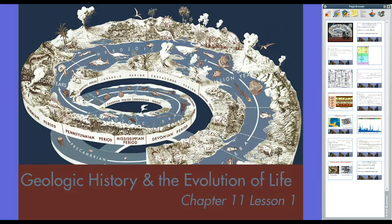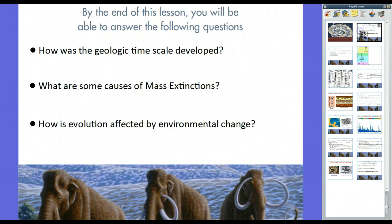We're going to go through the history of the Earth from its very beginning up until present time. We're going to spend a lot of time talking about dinosaurs and also the age of the mammals. But first, we're going to talk about how the timescale was developed as well as pre-Cambrian time before advanced life started really showing up on Earth. By the end of this lesson, you'll be able to answer the following questions: How was the geologic timescale developed? What are some causes of mass extinctions? And how is evolution affected by environmental change?